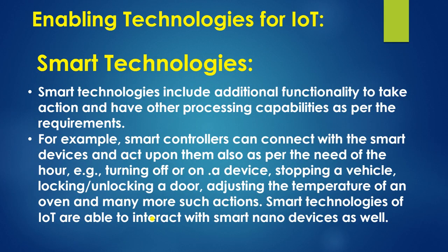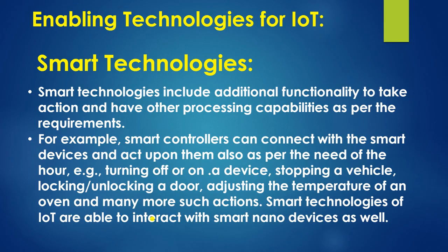Next is smart technologies, which include additional functionality to take action and have other processing capabilities as per requirements. Smart controllers can connect with smart devices and act upon them — for example, turning off or on a device, stopping a device, stopping a vehicle, locking or unlocking a door, adjusting the temperature of an oven, and many more. The smart technologies of IoT are also able to interact with smart nano devices.